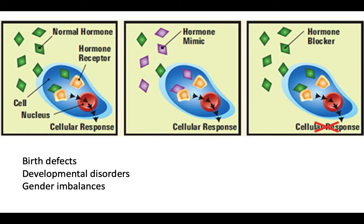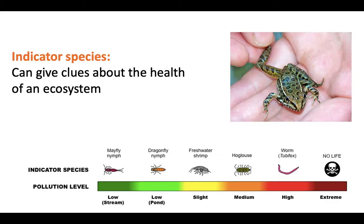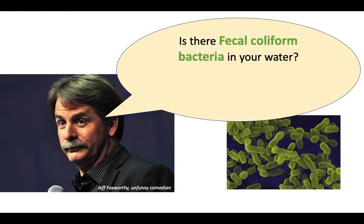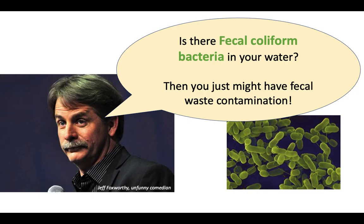Endocrine disruption can lead to birth defects, developmental disorders, and gender and sex imbalances. Thankfully, indicator species can give us clues about ecosystem health — in terms of pH, sedimentation, water quality, heavy metal levels, and more. For example, if you find fecal coliform bacteria like E. coli in your water, you can assume there's fecal waste contamination somewhere upstream or running off into those water sources.